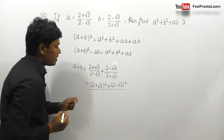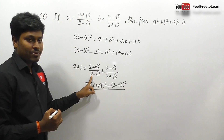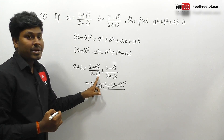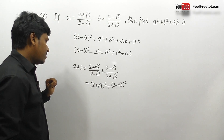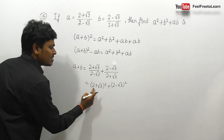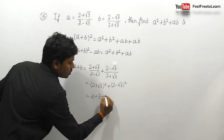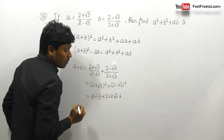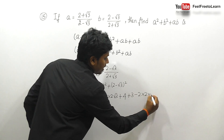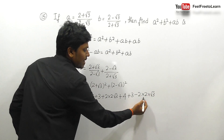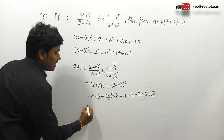The denominator is (2-√3)(2+√3) = 2² - (√3)² = 4 - 3 = 1, so we don't need to worry about it. Expanding: (2+√3)² = 4 + 3 + 2·2·√3 and (2-√3)² = 4 + 3 - 2·2·√3. The 2·2·√3 terms cancel, giving 7 + 7 = 14.